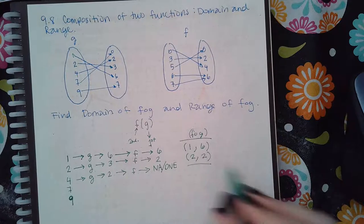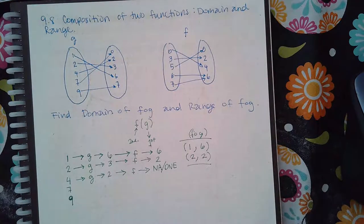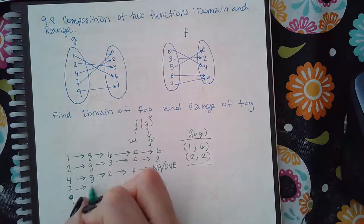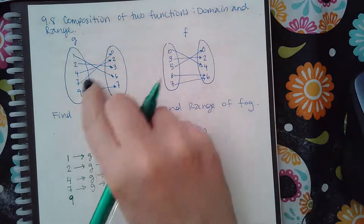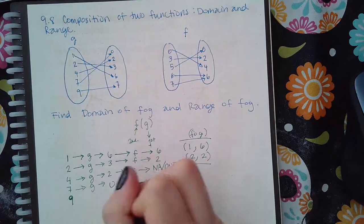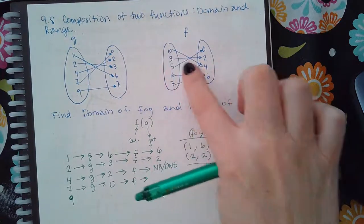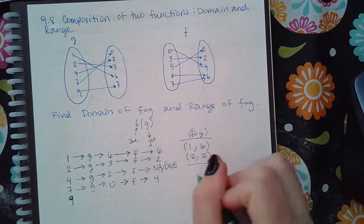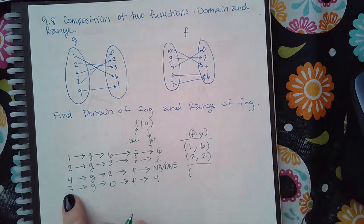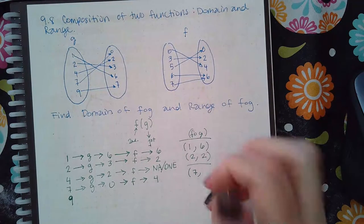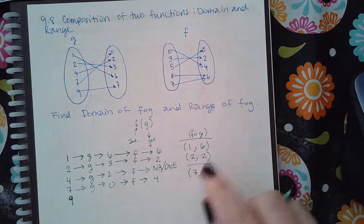Now I go on to seven. So seven, if I plug seven into g the output is a zero, and if I plug zero into f, zero into f gives me the value four. So my very first input was a seven and my very last output was a four, so this is the pair in f of g.